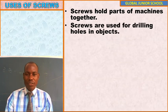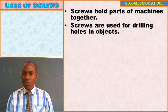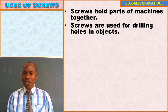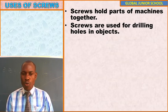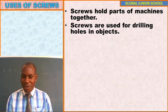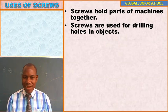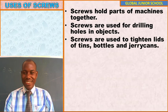Number two, screws are used for drilling holes in objects — for example, drilling a hole through a wall or drilling a hole in wood. We use a drilling machine for that purpose.